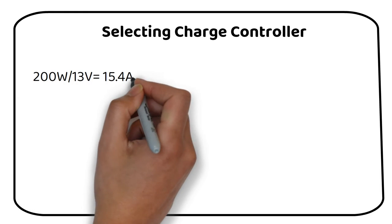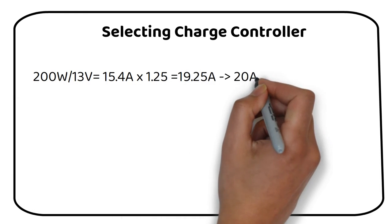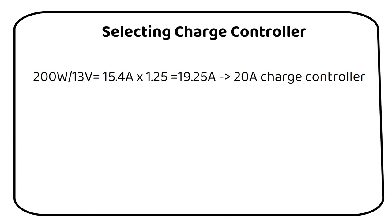We need to select the charge controller. We have to calculate two things here. The first is the current to the battery and the second is the maximum input voltage of the charge controller. If we divide 200 watts of solar by 13 volts charging voltage, we become 15.4 amps. We must multiply this by a safety factor of 1.25 to become 19.25 amps. We can use a 20 amp charge controller.